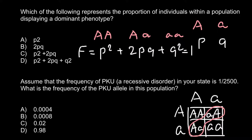As you can see, two genotypes represent the dominant phenotype: homozygous dominant (P²) and heterozygous (2PQ), because the heterozygous genotype produces the same phenotype as homozygous dominant. So these two genotypes make one phenotype, and the correct answer is answer C.